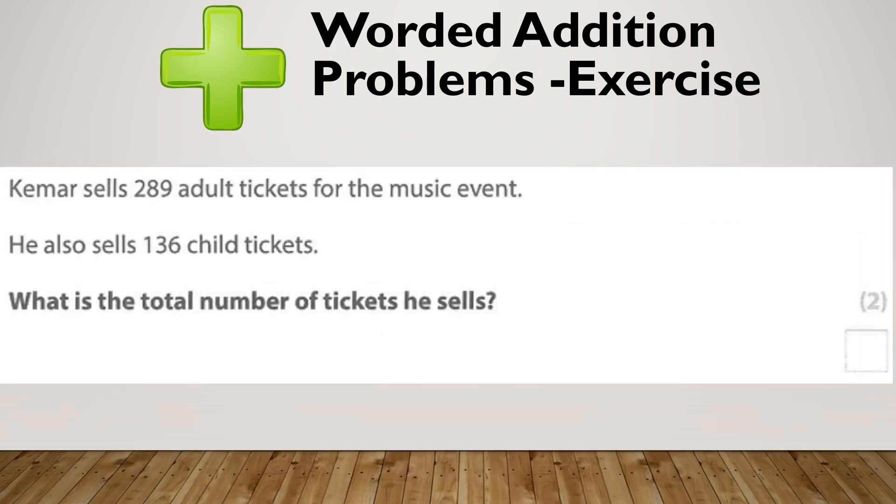Let's do one more. Kumar sells 289 adult tickets for the music event. He also sells 136 child tickets. What is the total number of tickets he sells? Pause and give it a go.